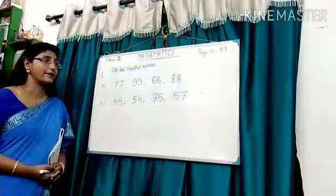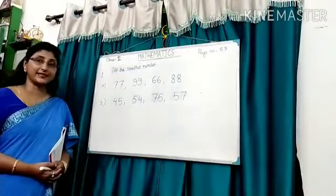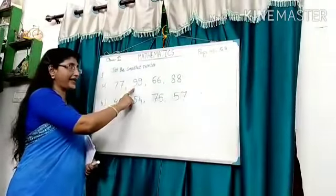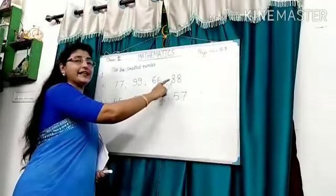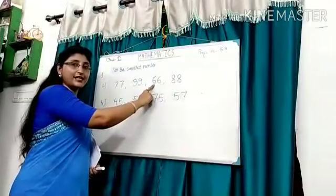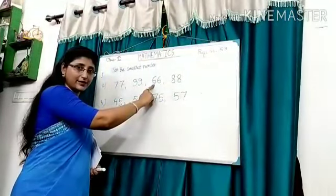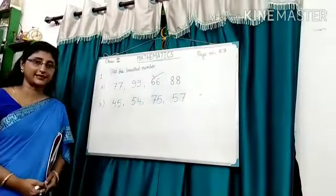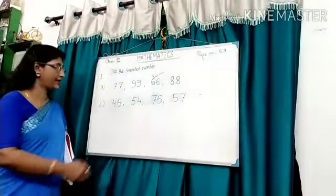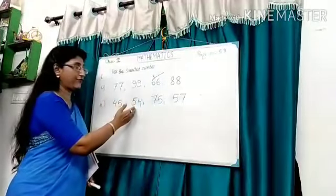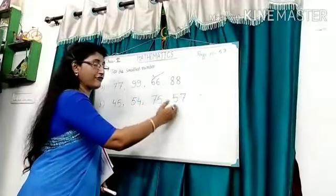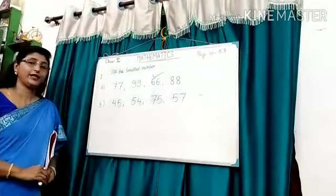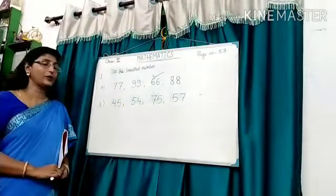Look at the board. Take the smallest number. All are two digit numbers, so see the tens place first. Here the numbers in tens place are 7, 9, 6 and 8. 6 is the smallest in all numbers. So, 66 is the smallest number. Take the smallest number, 66.